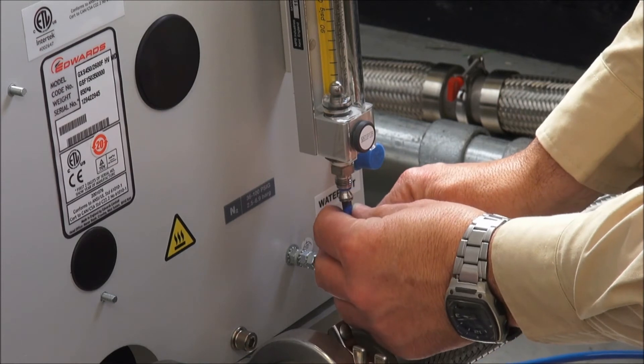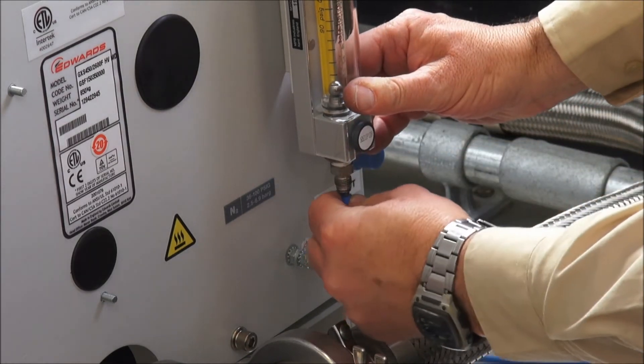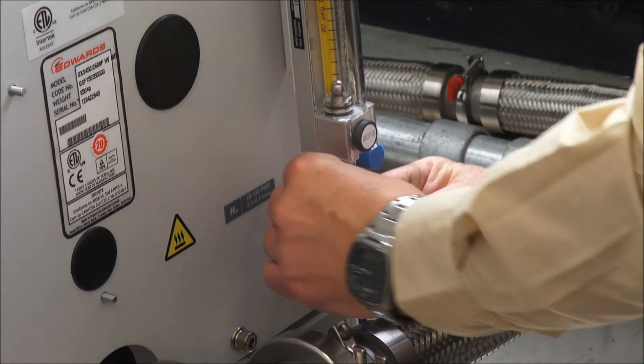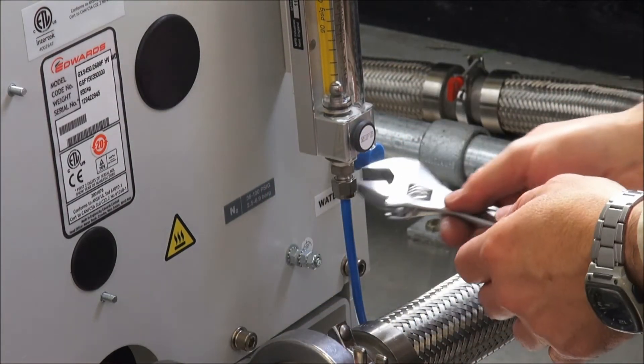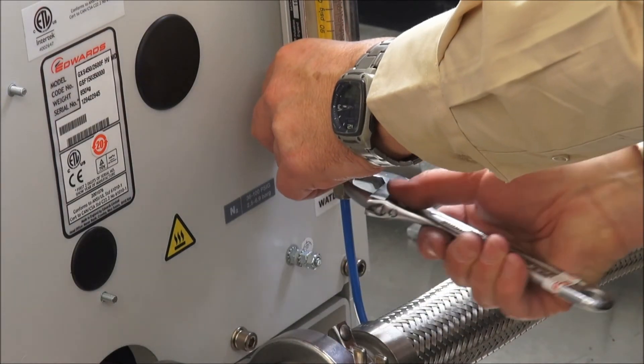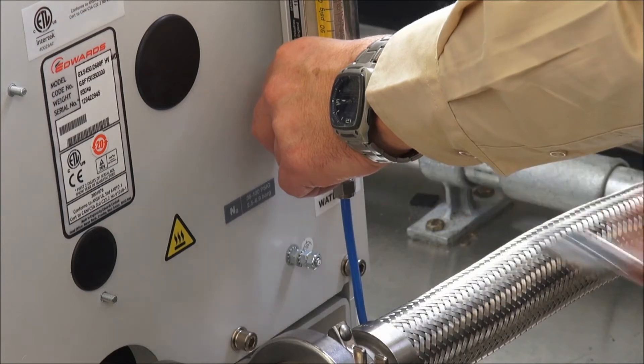Always remove the blue shipping stopper from this fitting even if your purge gas supply is not yet ready. Attach your gas supply. This would normally be dry nitrogen but clean dry compressed air can also be used if appropriate for the application. The gas pressure specification is clearly marked on the label next to the rotameter connection. Tighten the connection properly.